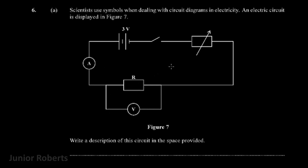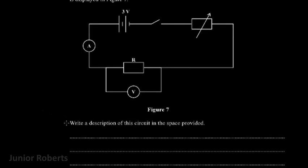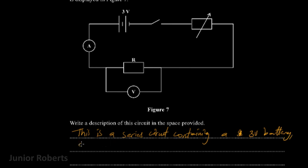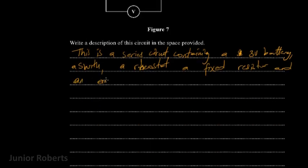The question asks us to write a description of the circuit in the space provided. We can say this is a series circuit. Starting with the battery: we have a three-volt battery, a switch, a rheostat, a fixed resistor, and an ammeter all connected in series.